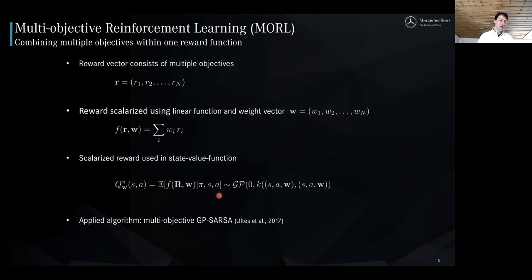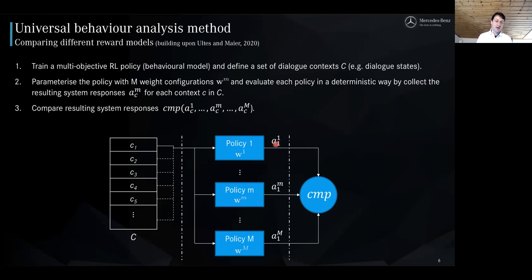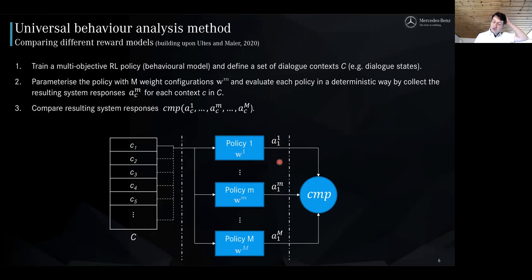In this work, we use the multi-objective GP-SARSA algorithm to conduct our experiments. This multi-objective reinforcement learning is also the basis for the behavior analysis method. We have one trained multi-objective policy parameterized with different weight configurations — up to M of those — and a set of contexts, which are usually dialogue states. For each of these contexts, we look at all the policies and what action they produce when probed with these contexts. For each context, we can compare the resulting system actions and compute similarity scores, or look at distributions for different weight configurations.